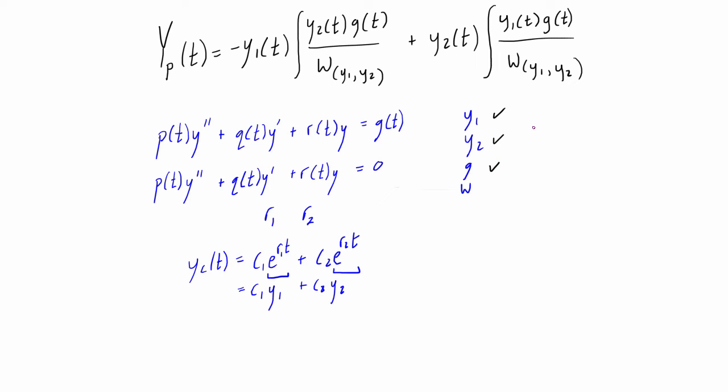And then we can lastly find the Wronskian. If you remember, the Wronskian is just the determinant of this little matrix here where we have y1, y2, and then y1 prime and y2 prime.